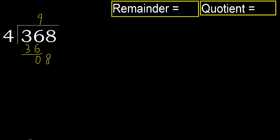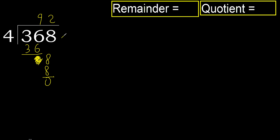Next, eliminate 0 on this side. Here, 8. 4 multiplied by 2 is 8, is not greater. Subtract. Next, that is not a number, therefore finish it.